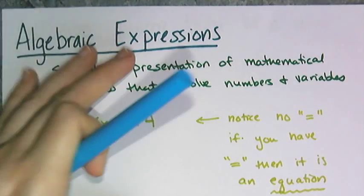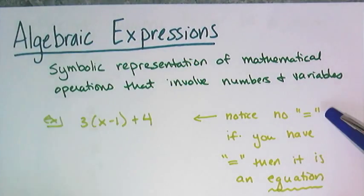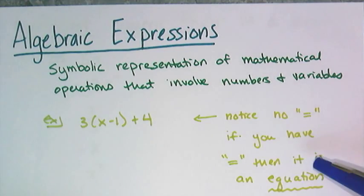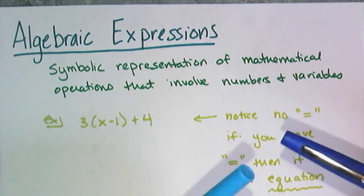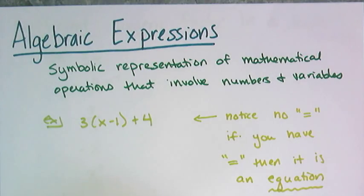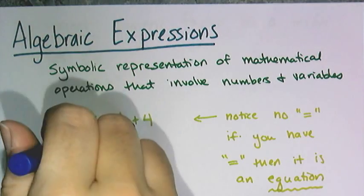Now you'll notice that there is no equal sign, because if you have an equal sign and more stuff, then it's no longer an expression, it's an equation. Of course, equations are usually made up of two expressions that are set equal to each other, but we're going to start off with expressions.